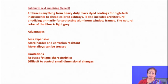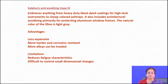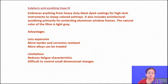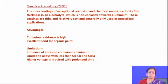Sulfuric acid anodizing covers applications ranging from heavy-duty black-dyed coatings for high-tech instruments to architectural anodizing for protecting aluminum window frames, and can be used for corrosion protection and scratch resistance. It also provides improved fatigue properties and is sometimes harder and more corrosion resistant. Sulfuric acid is preferred over chromic acid in some cases because of its high hardness and good corrosion resistance, which is mainly due to the higher density of the oxide scale formed in sulfuric acid anodizing compared to chromic acid anodizing.